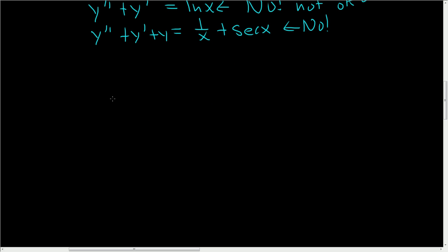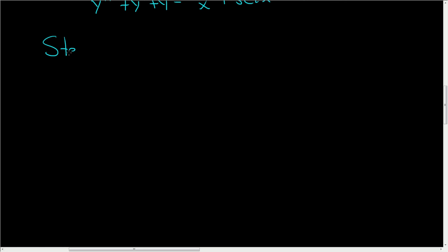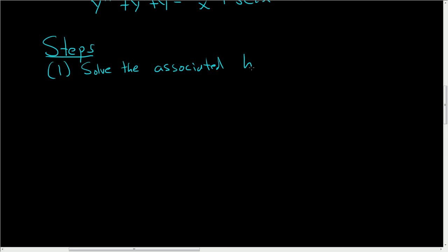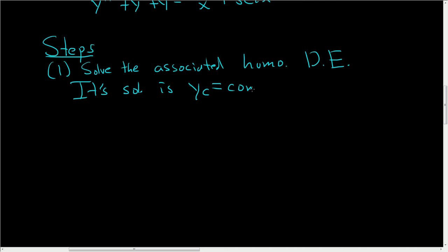Let me give you the steps in case you ever want to do one of these on your own. In a future video I'll do some examples, but in this video I just want to focus on how to do the problem. The first step when solving a differential equation using this method is to solve the associated homogeneous DE. You basically set your differential equation equal to zero, and its solution is called y_c — the complementary solution, also called the complementary function.